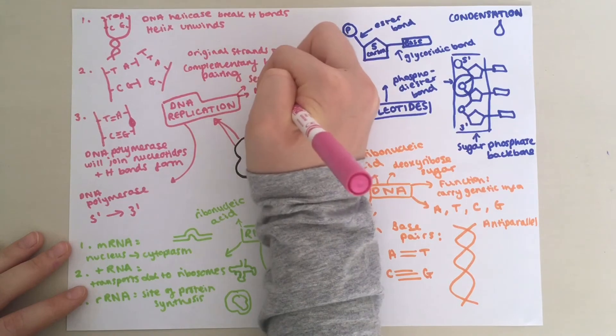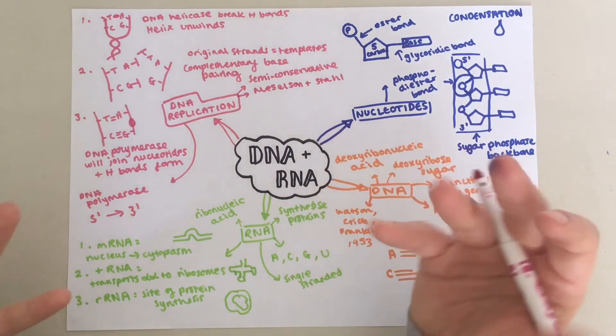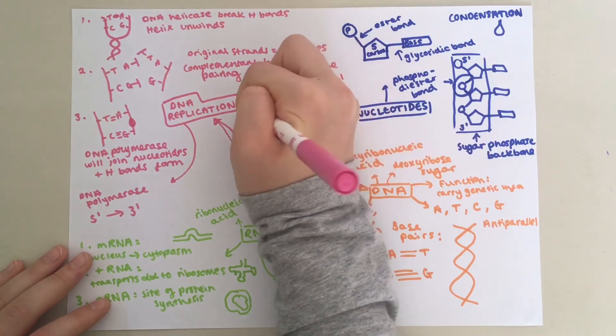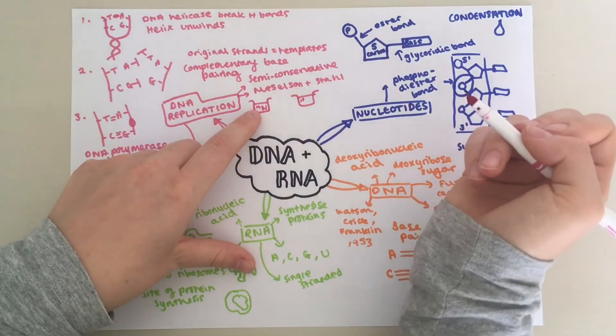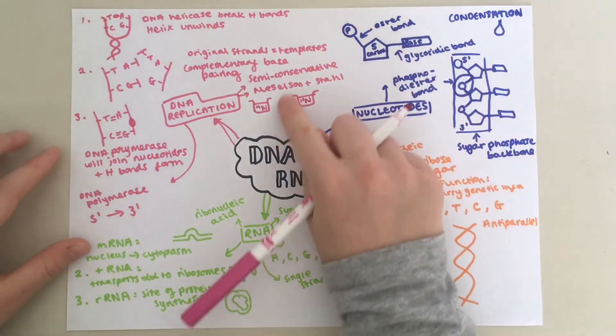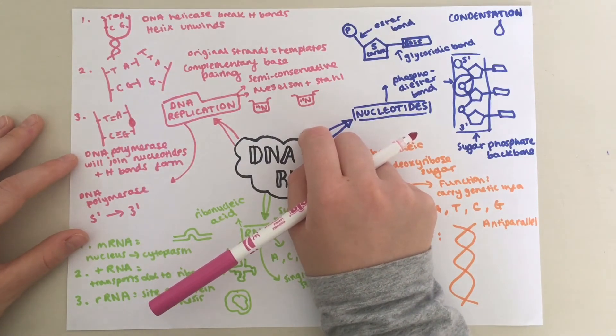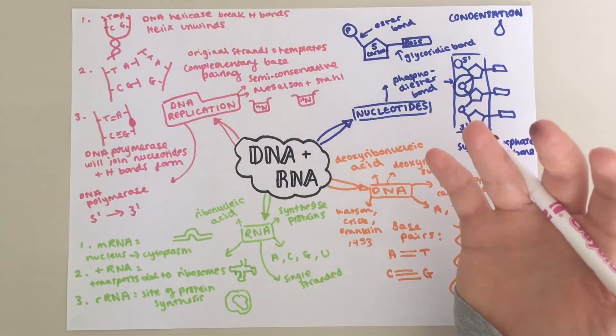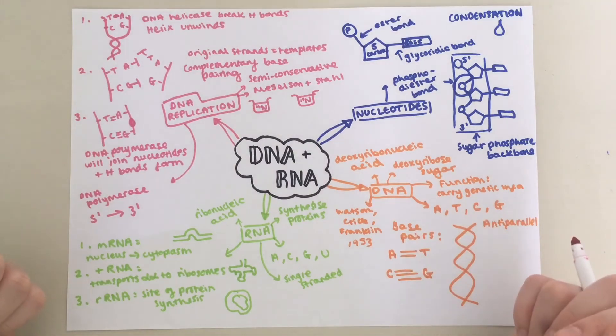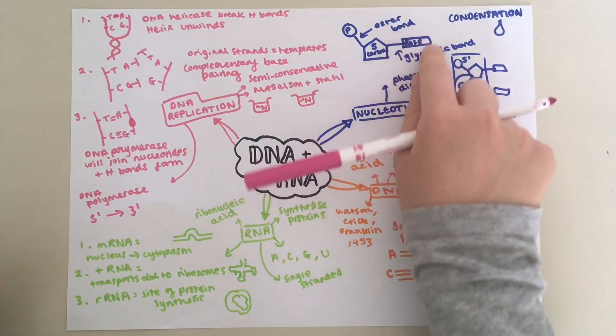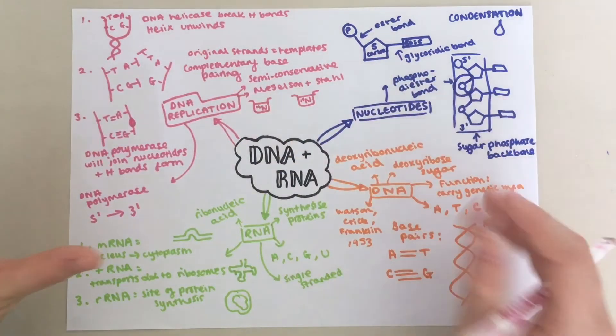Two scientists known as Meselson and Stahl proved this semi-conservative replication theory by experiment. Basically, what they did is they grew two samples of bacteria. They grew some bacteria in a broth containing only light nitrogen known as N14. And then they grew some bacteria in a broth containing only heavy nitrogen known as N15. The N14 and N15 just stand for their isotopic masses. As the bacteria reproduced, it would take up nitrogen from the broth to make nucleotides for new DNA because you need nitrogen to make these nitrogenous bases. So then after a while, a sample was taken from each of these separately and spun in a centrifuge.